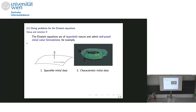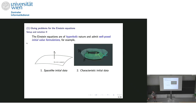Let me recapitulate the initial value problems for the Einstein equations. One can set up two different initial value problems using the fact that the Einstein equations are hyperbolic. On the left hand side we have the space-like initial value problem — the Cauchy problem — which is well studied in Riemannian geometry. On the right hand side we have the characteristic initial value problem, where initial data for the Einstein equations is posed on two transversely intersecting null hypersurfaces. Given the data, you develop into the future domain of dependence of these two null hypersurfaces.